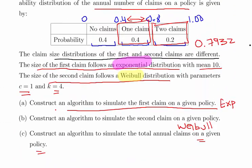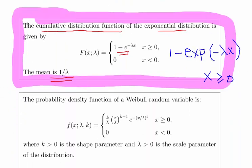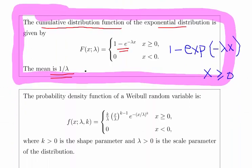The mean here is 10 for this exponential distribution. So lambda is equal to 1 over 10.